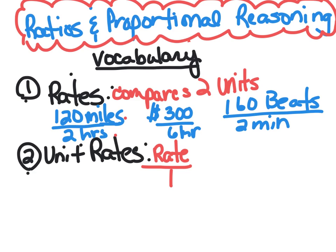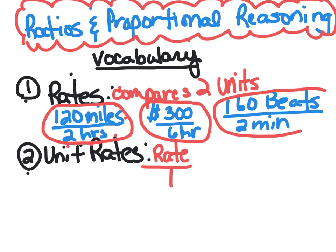So like this one here: 120 miles over two hours - that is a rate. This one here is $300 for six hours, and the third example is 160 beats for two minutes. So it kind of looks like a fraction.